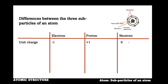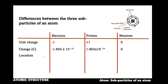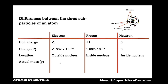The neutron is neither positive nor negative, that is, it is neutral. The proton is positive, that is, it carries a charge of +1.602 × 10⁻¹⁹. The neutron is neither positive nor negative, that is, it is neutral. In terms of location, electrons can be found outside the nucleus, and both protons and neutrons can be found inside the nucleus. The actual mass of the electron is 9.1 × 10⁻²⁸, the proton is 1.673 × 10⁻²⁴, and the neutron is 1.675 × 10⁻²⁴.